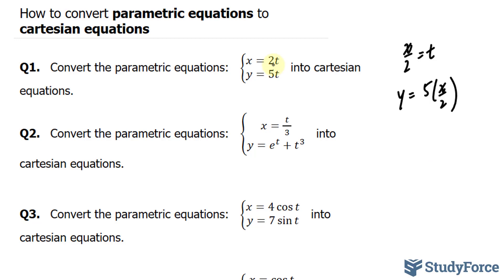Question two reads, convert the parametric equations, shown here, into Cartesian equations. Once again, what I want to do is solve for t in the first one, where I have 3x is equal to t. I multiply both sides by 3.